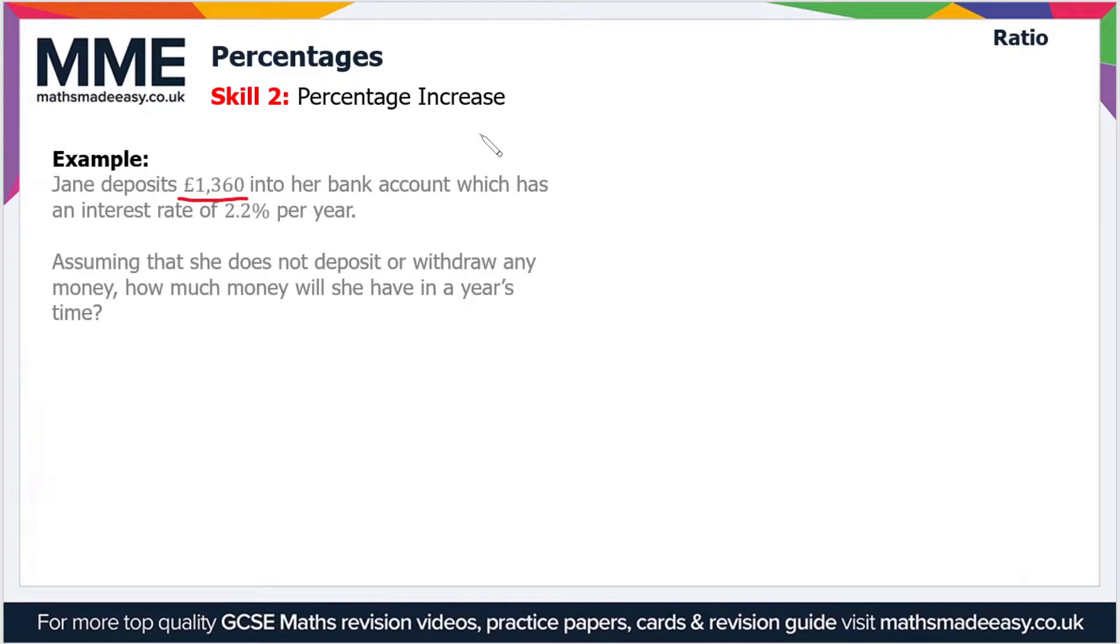So let's get that number as a decimal. We want the decimal equivalent of 2.2%. First of all, 2.2% is equal to 0.022. So if we add this value to 1, so 1 plus 0.022, that gives us our multiplier which is 1.022.